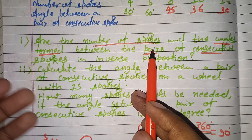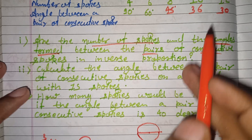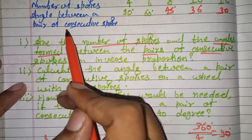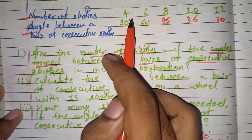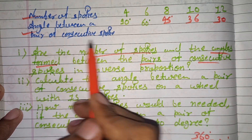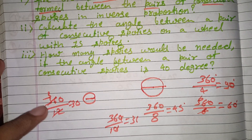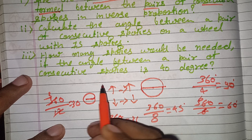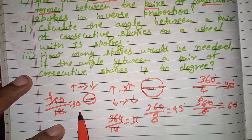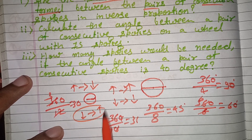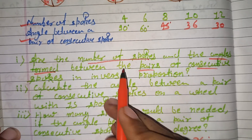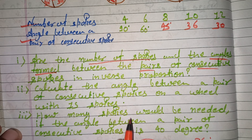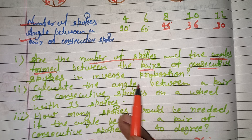Now, from the table, we look at the relation between the number of spokes and the angle between the pair of consecutive spokes. In direct proportion, if one quantity increases the other also increases. But here, as the number of spokes increases, the angle decreases. So this is an inverse relation — it is inverse proportion.